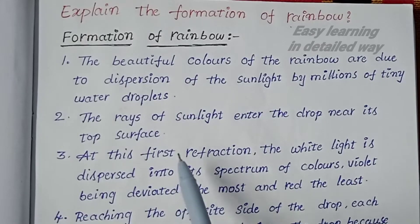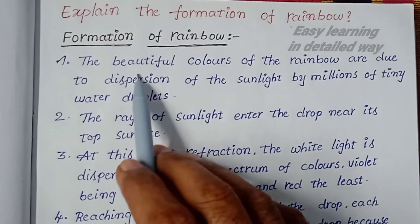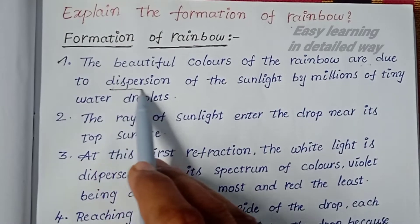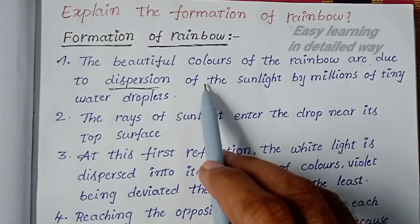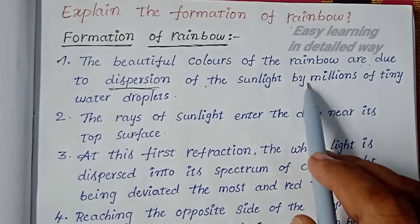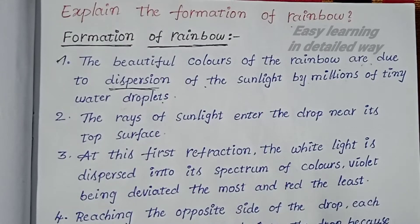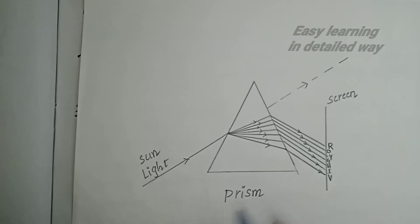The formation of rainbow: the first point is that the beautiful colors of the rainbow are due to dispersion. The key word here is dispersion - dispersion of the sunlight by millions of tiny water droplets. That is why the beautiful rainbow forms.